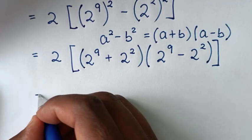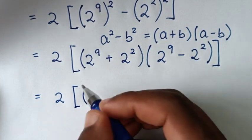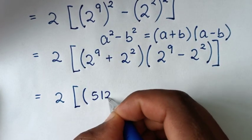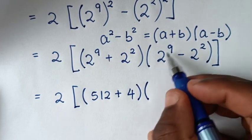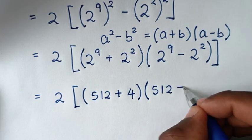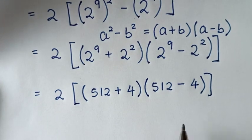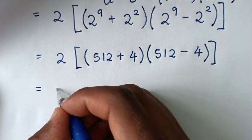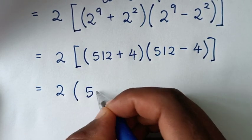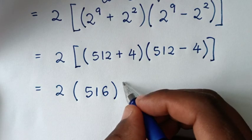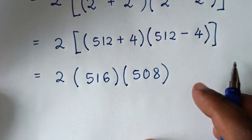In the next step, it will be equal to 2 times (2 power of 9 is 512, plus 2 power of 2 which is 4) times (2 power of 9 is 512, minus 2 power of 2 which is 4). So this becomes 2 times (516) times (508).